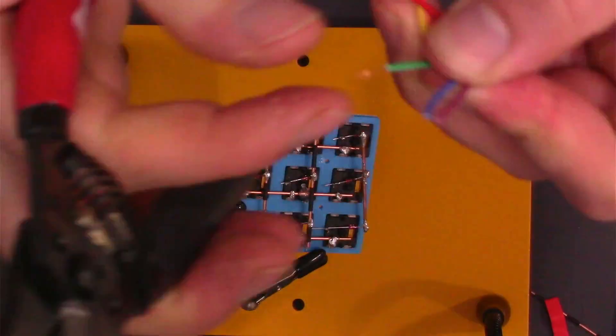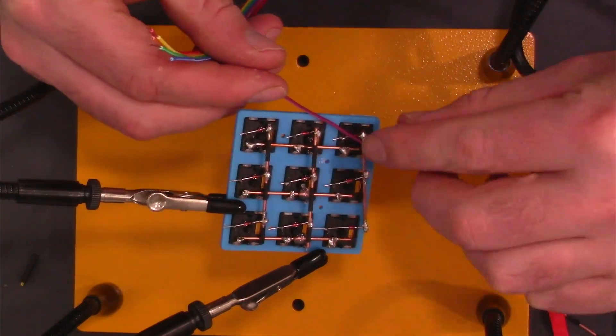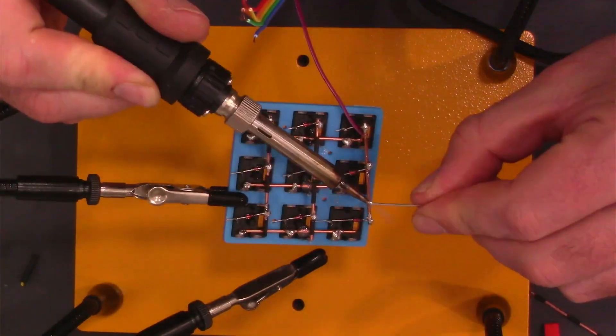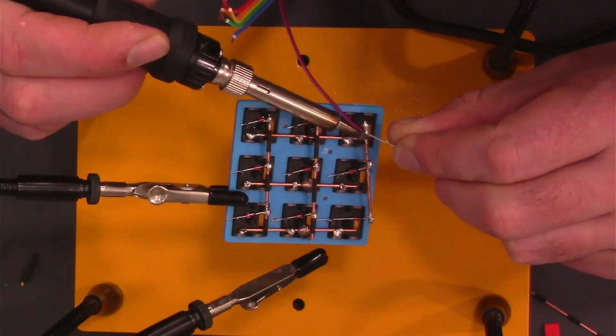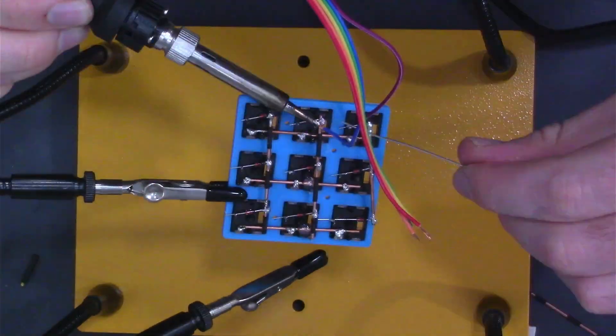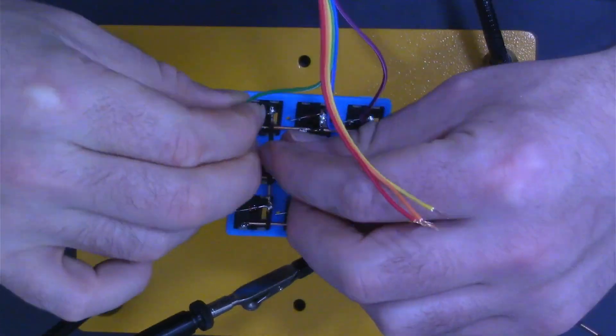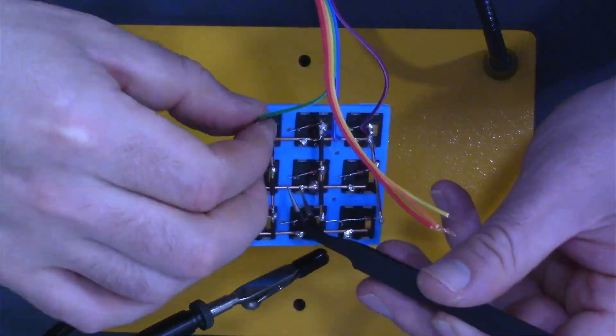I'll strip some jumper wires and connect them to the rows and columns of my keyboard. The better I wrapped the jumper to the copper wire, the easier it was to solder them together.